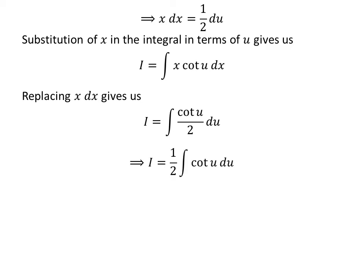As half is a constant, taking out the constant gives us i is equal to half times integral of cotangent of u with respect to u.